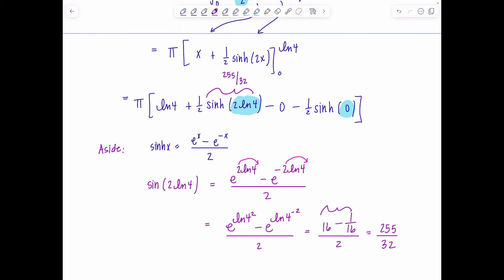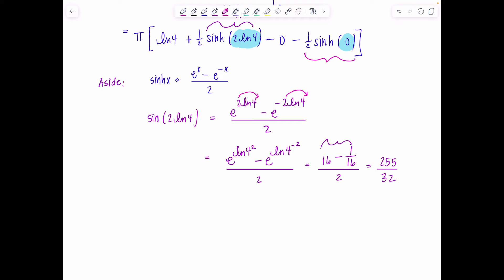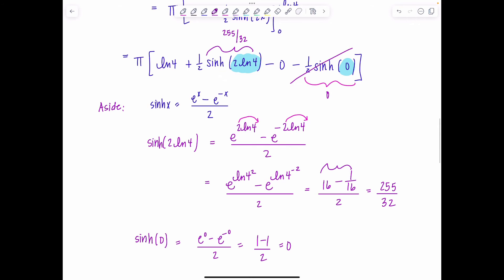And then the other term I need to evaluate, sinh of 0. That's going to be e to the 0 minus e to the negative 0 over 2. 1 minus 1 over 2. So that's just 0. So this guy's gone.